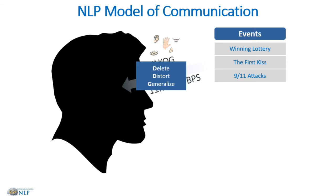Deletion occurs when we selectively pay attention to particular aspects of our experiences and not to others. Like driving down the road — you don't pay attention to every single signboard. Similarly, have you ever noticed a new building that you hadn't noticed before, and yet it was there all the time? You simply deleted it because it wasn't important to you. Without deletion, we would be faced with far too much information for our conscious mind to handle.